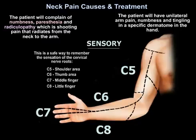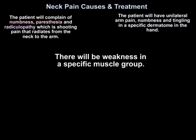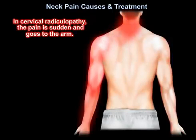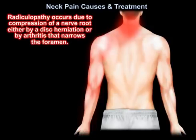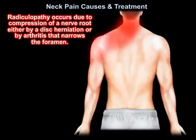As you see in this diagram, the patient will also have weakness in a specific muscle group. In cervical radiculopathy, the pain is sudden and goes to the arm. Cervical radiculopathy occurs due to compression of the nerve root, either by disc herniation or by arthritis that narrows the foramen.